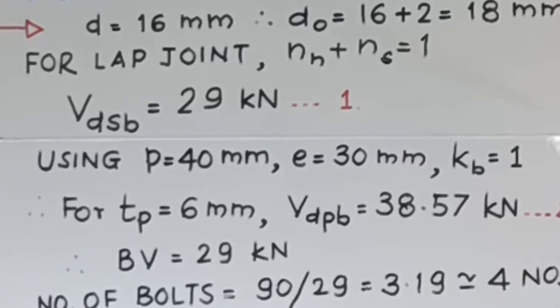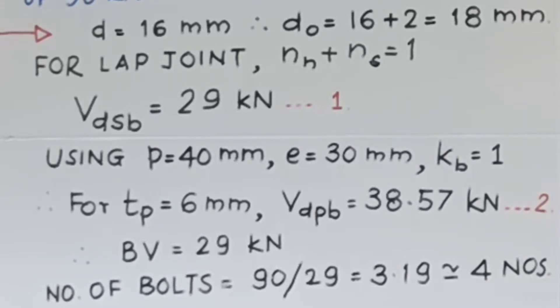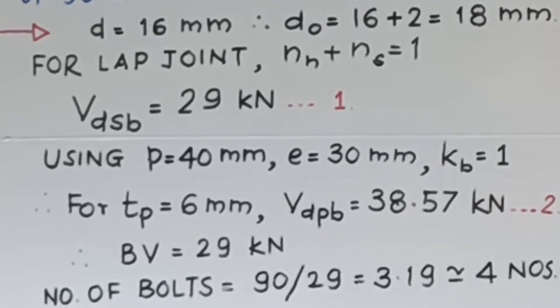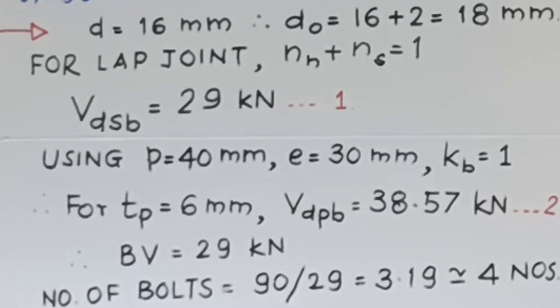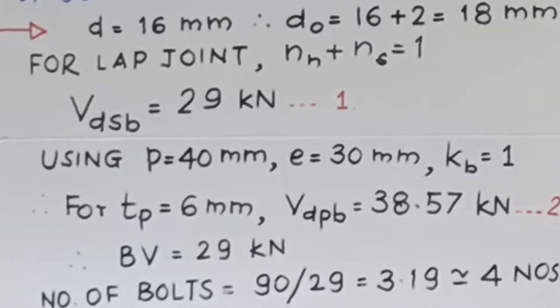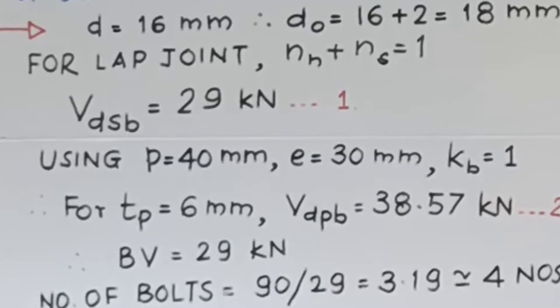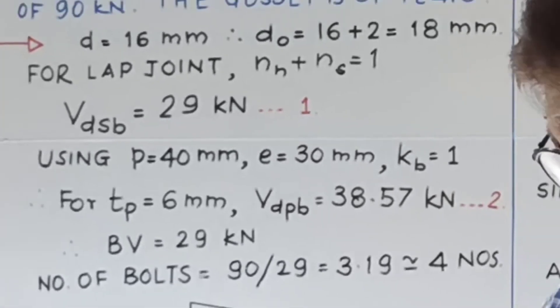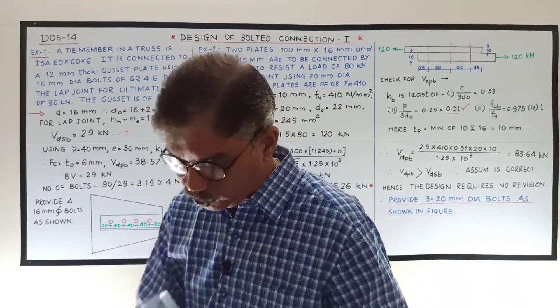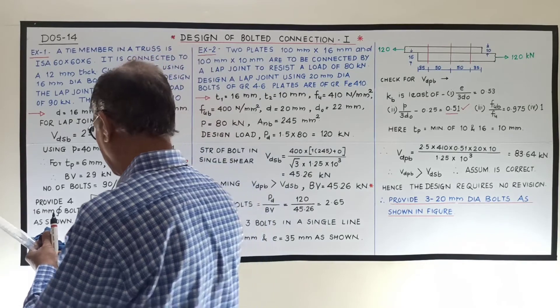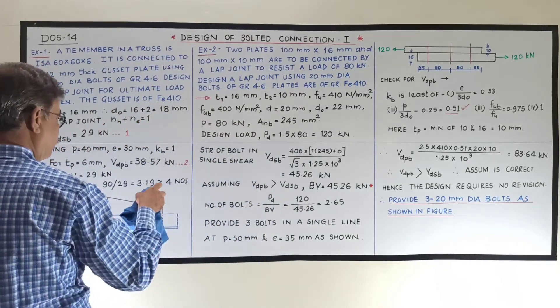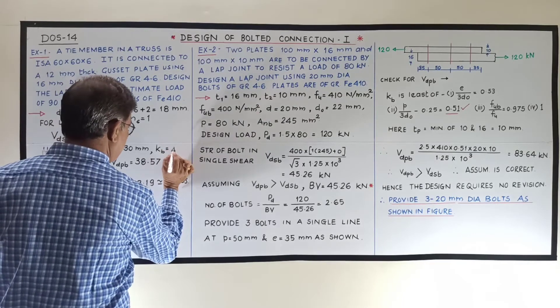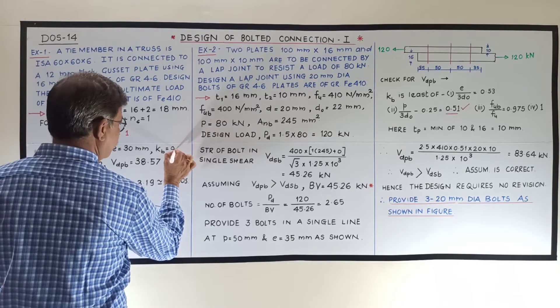KB is equal to minimum of E upon 3 times D0, second P upon 3 times D0 minus 0.25, third one is FUB upon FU and fourth one is 1. So if you use that, you will get the value of KB as 0.49. Using these two values, that is P is equal to 40 mm, E is equal to 30 mm, this comes out to be 0.49.